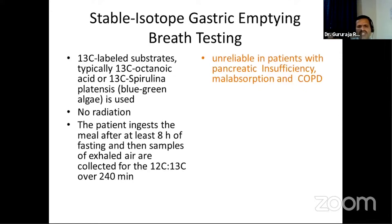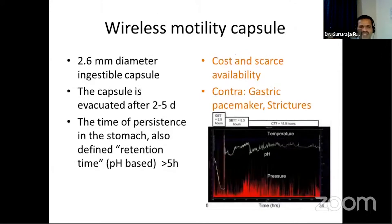The stable isotope gastric emptying breath test uses 13C-octanoic acid or Spirulina platensis (a blue-green algae), which is not radioactive. After an eight-hour fast, the patient ingests the meal and exhaled air samples are collected; the ratio of standard carbon isotope to 13C is measured over 40 minutes. The advantage is no radiation exposure. The disadvantage is unreliability in patients with absorption problems such as pancreatic insufficiency, malabsorption, or COPD, since the test assumes absorption is directly proportional to gastric emptying.